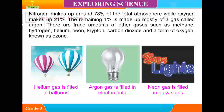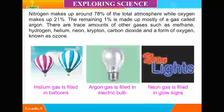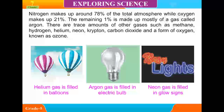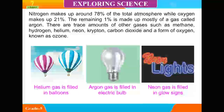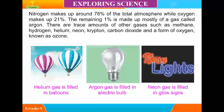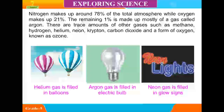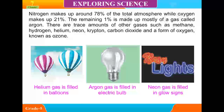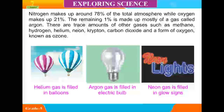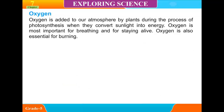There are trace amounts of other gases such as methane, hydrogen, helium, neon, krypton, carbon dioxide, and a form of oxygen known as ozone. Oxygen is added to our atmosphere by plants during the process of photosynthesis, when they convert sunlight into energy.